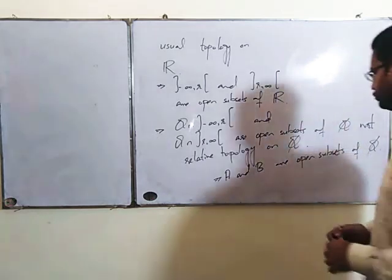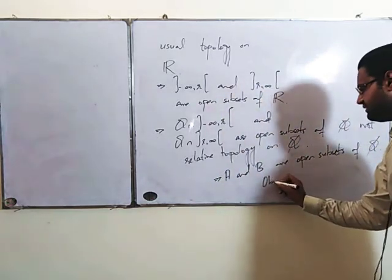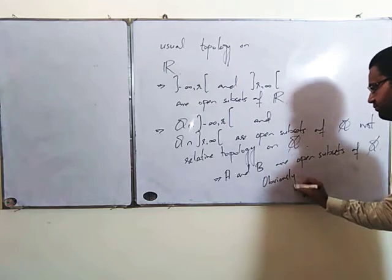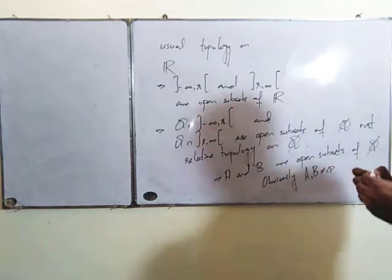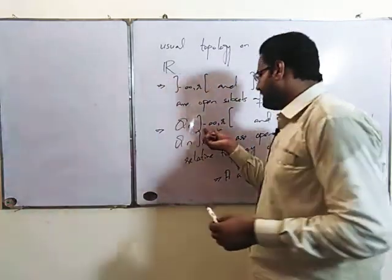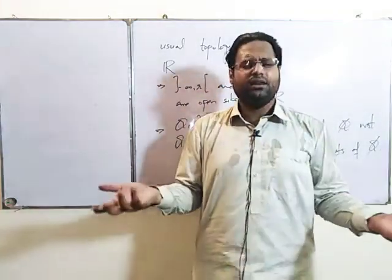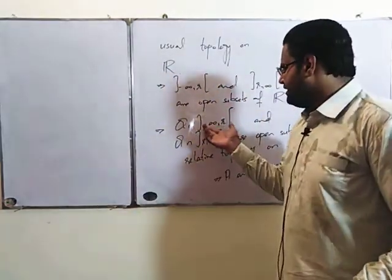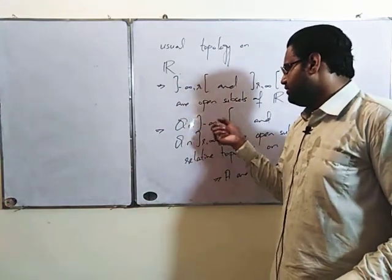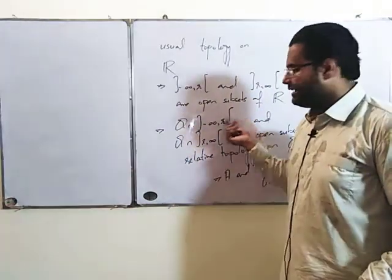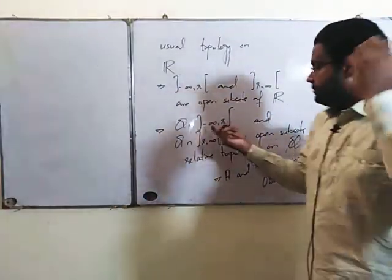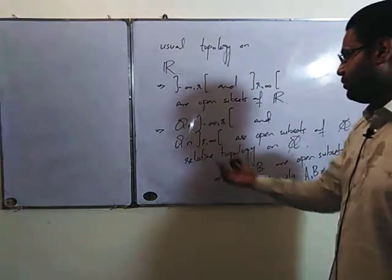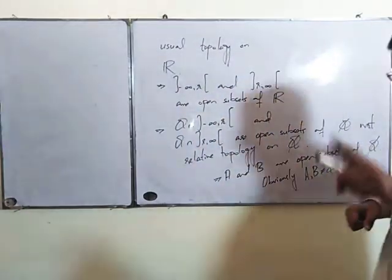Obviously, A and B are non-empty. Why is this non-empty? You can see that in these intervals there are infinitely many numbers, and in each interval there are rationals because the rationals are dense in R. If there are infinitely many rationals, then each set is non-empty. So A and B are non-empty and open.